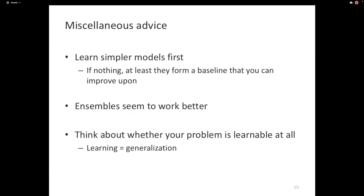Some final random advice: as a general rule, try simpler models first. If a simple model works, you're done and you have a good baseline. If you have more time, train an ensemble — combining multiple classifiers tends to improve results. Ensembles of neural networks give incremental but real improvements.